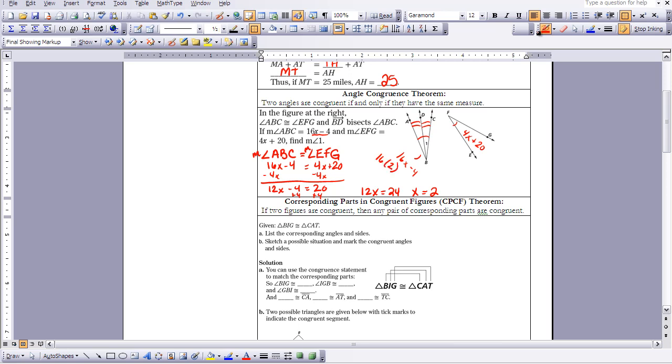16 times 2 minus 4. That would be 32 minus 4, which would give me 28. Now we know that the measure of angle ABC equals 28.